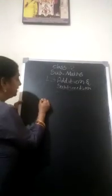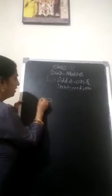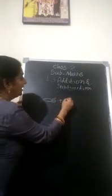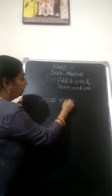Like that, you have to do. For example, see here. One chocolate is here. Right? You have one chocolate. Plus, your mummy gave 2 chocolates.